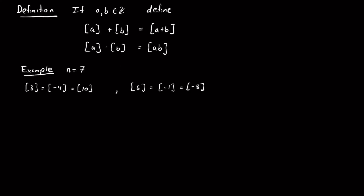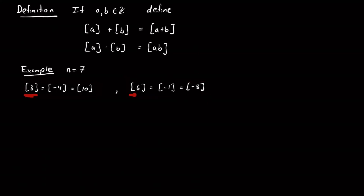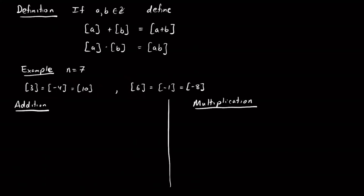Let's start with our n = 7 example. We have many representations of [3] and [6], and we want to confirm that [3] + [6] gives the same answer regardless of representative. Using 3 and 6: [3] + [6] = [9]. Since we're working mod 7, the remainder of 9 divided by 7 is 2, so we get [2].